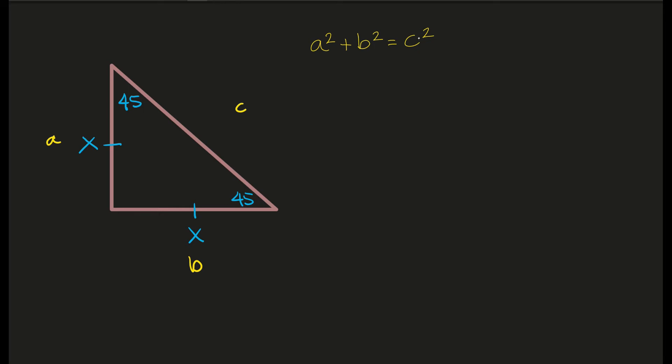Here I have a squared, so that would be x. So this is x squared plus b squared, and b squared is also x. Remember those used to be the sides of a square. And we don't know what the hypotenuse is, so we're just going to keep that as c squared.